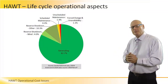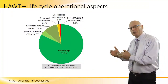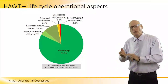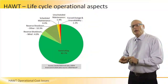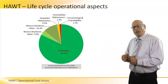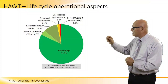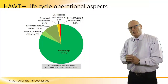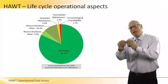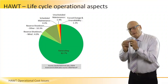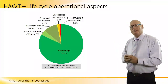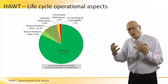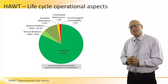Ten percent of the time is reserve shutdown due to environmental problems, utility problems, community problems, and mechanical problems. Scheduled maintenance is only 0.4%. That low figure represents a very highly reliable system — if only 0.4% is scheduled preventive maintenance, the system as a whole is by its nature very reliable, and indeed it is.